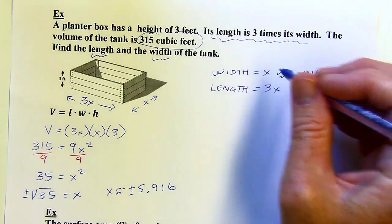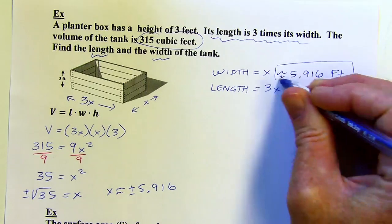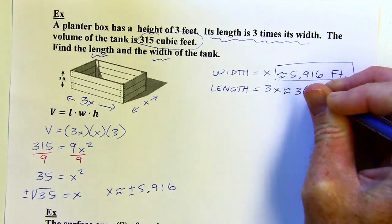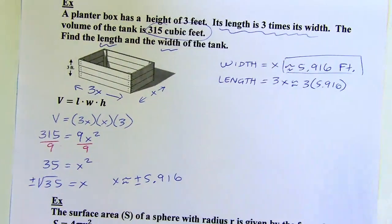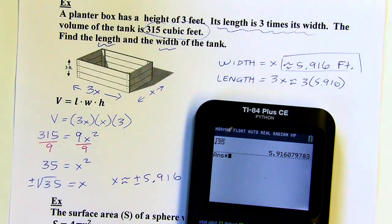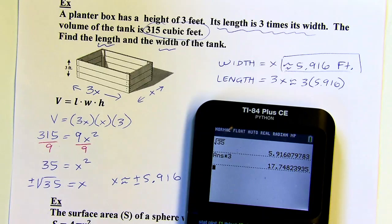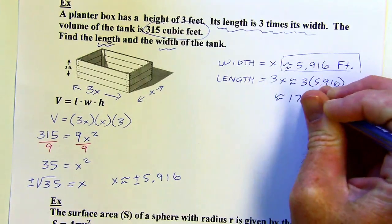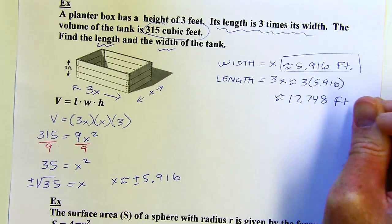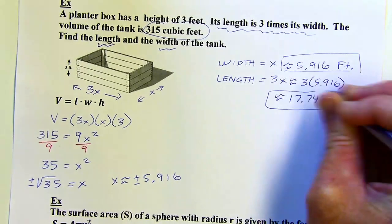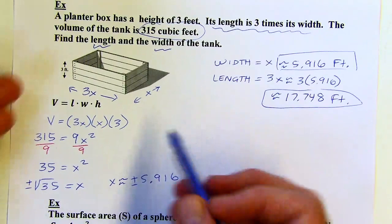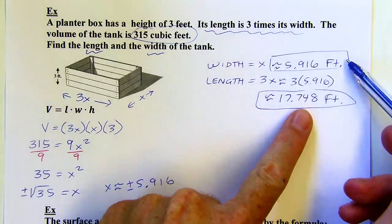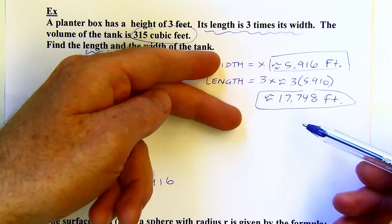There is x — the width is approximately 5.916 feet. Then I'll triple that for the length: 3 times 5.916 is about 17.748 feet. It doesn't really matter which one you call width and which you call length, because you could turn the box on its side — either way is correct.